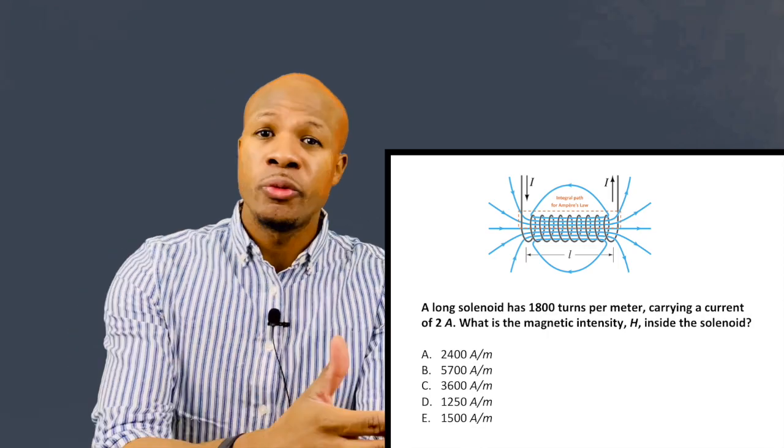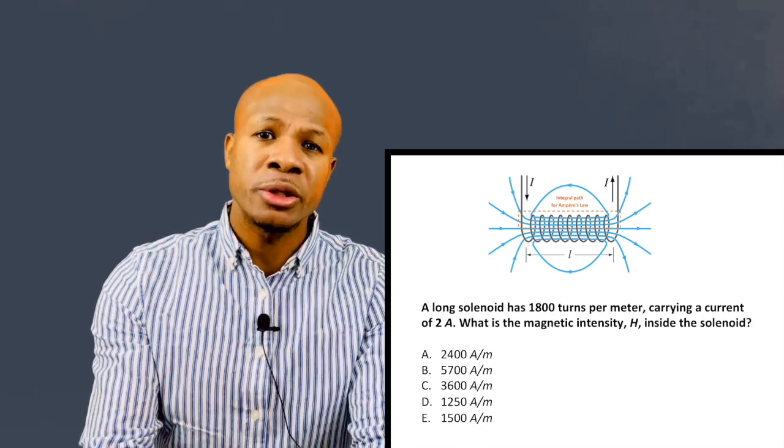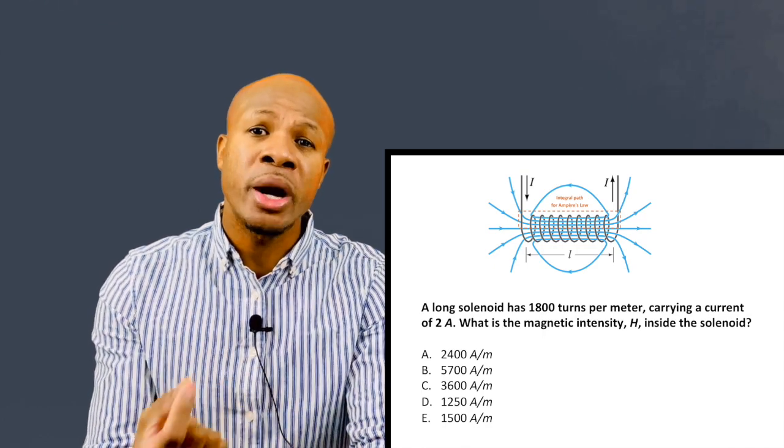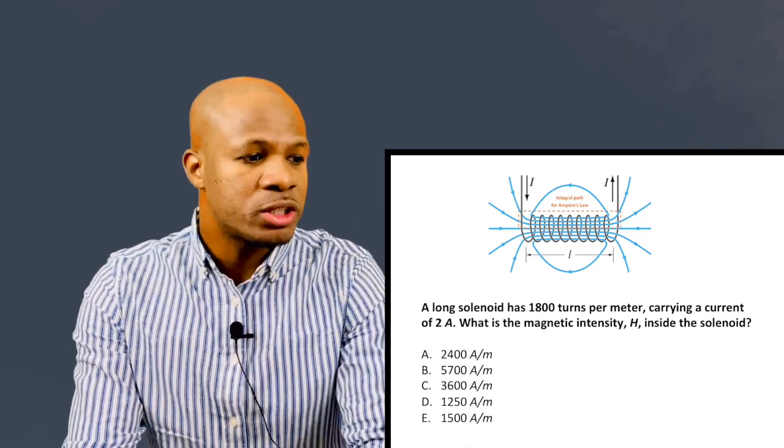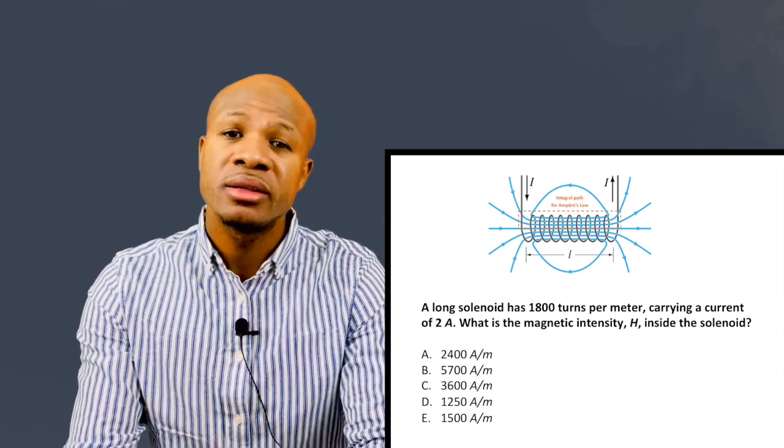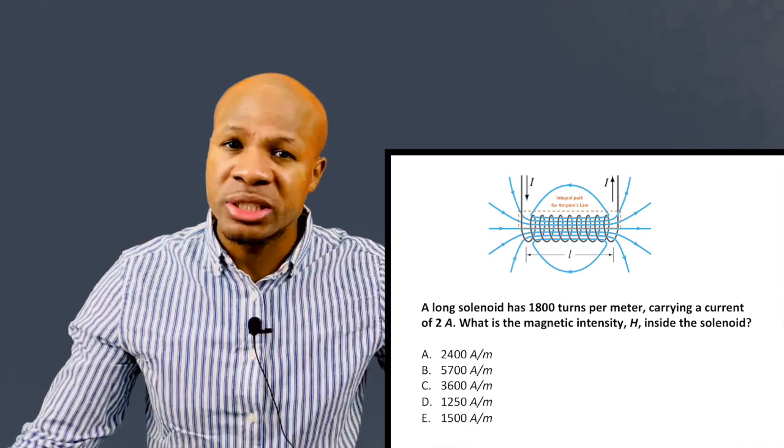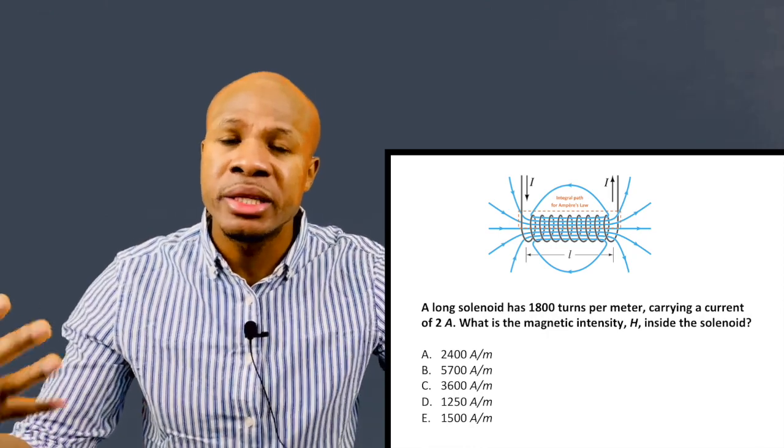So in this question, we're told that we have 1800 turns of electrical wire around the solenoid and the current passing through the wire is two amps. So we want to know what is the magnetic intensity that is inside of this solenoid, which is basically like an MRI machine. What's the magnetic intensity in there?